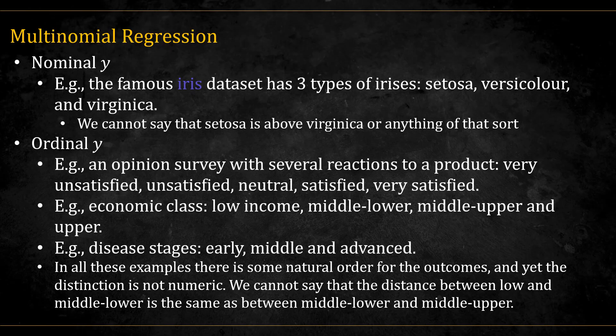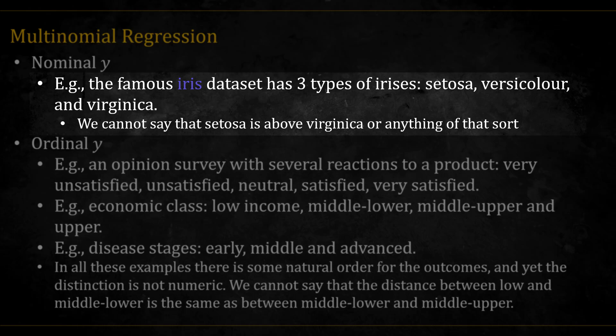Here is some example for both types. The famous iris dataset has three types of irises: setosa, versicolor, and virginica. We cannot say that setosa is above virginica or anything of that sort.